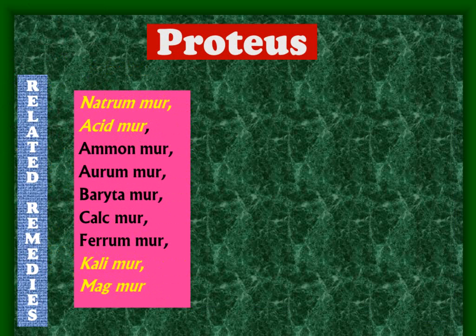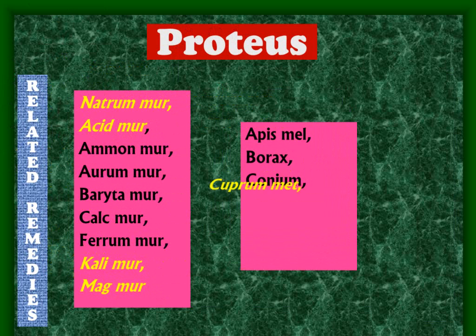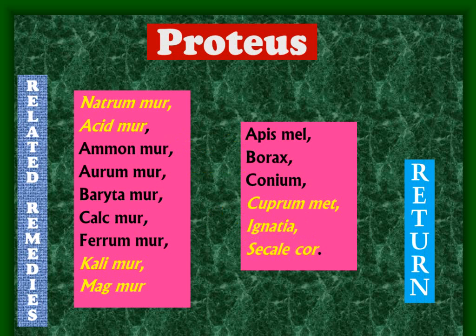The related remedies for Proteus include all the muriaticums — Natrum mur, Acid mur, Kalium mur, Mag mur — then Ipecac, Borax, and Cuprum met, which has those spasmodic pains and intermittent claudication (the materia medica will say 'cramps in the calves' — we must interpolate this as intermittent claudication in current medical terms, and we can call them both). Also Ignatia and Cicuta. These help confirm the common picture and accordingly prescribe Proteus.